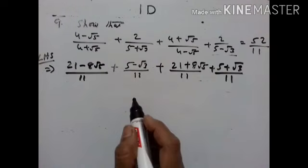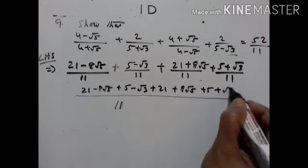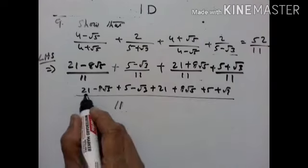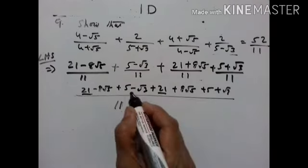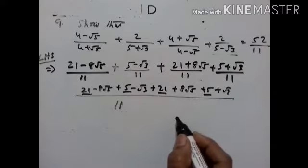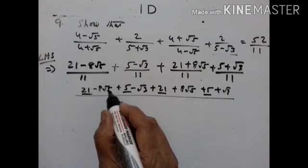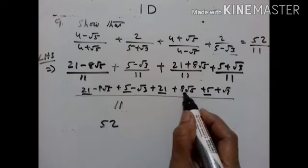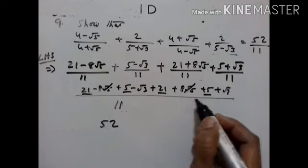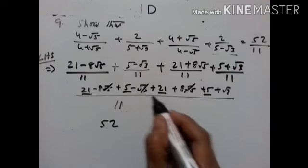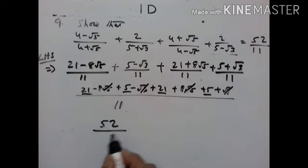Let us add all these numbers. The LCM is 11. Adding the numerators: 21 plus 21 equals 42, and 42 plus 10 equals 52. The terms minus 8√5 and plus 8√5 cancel to 0. The terms minus √3 and plus √3 cancel to 0. So the total is 52 upon 11.